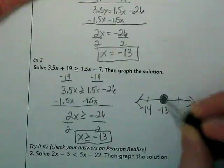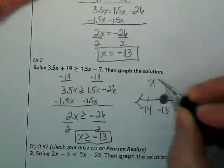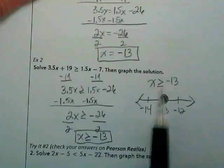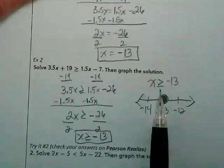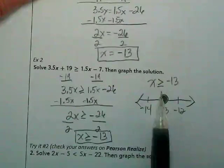It's going to be shaded because it's greater than or equal to. And the inequality sign is showing us what direction we're going to go. Which direction? Right. To the right.